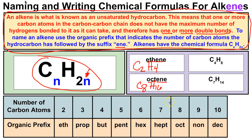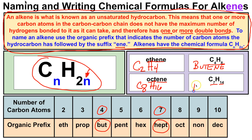If we're asked to name a hydrocarbon with four carbon atoms and eight hydrogens: 'but-' is the prefix for four, and 2 times 4 is 8, so it fits the CₙH₂ₙ formula and gets the '-ene' ending — giving us butene. If we have seven carbons and 14 hydrogens: the prefix 'hept-' is used, and 2 times 7 is 14, so that's heptene. That's how we name and write chemical formulas for alkenes.